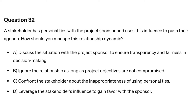Question thirty-two. A stakeholder has personal ties with the project sponsor and uses this influence to push their agenda. How should you manage this relationship dynamic? A. Discuss the situation with the project sponsor to ensure transparency and fairness in decision-making. B. Ignore the relationship as long as project objectives are not compromised. C. Confront the stakeholder about the inappropriateness of using personal ties. D. Leverage the stakeholder's influence to gain favor with the sponsor.